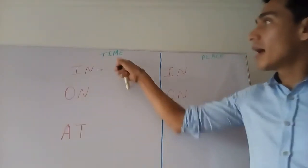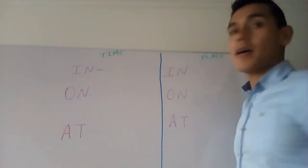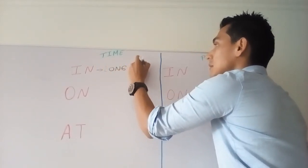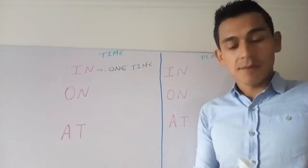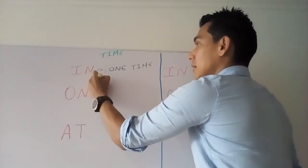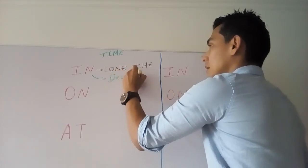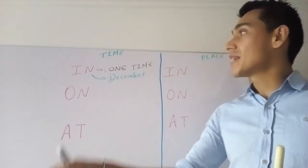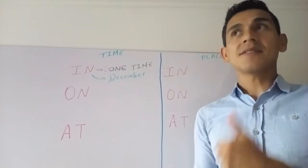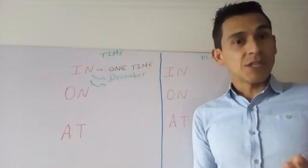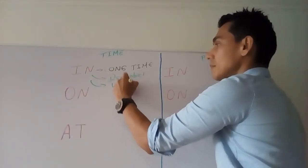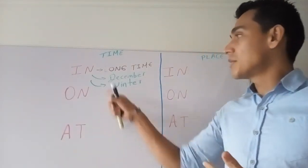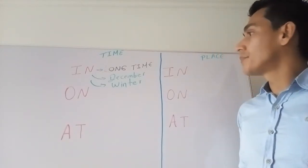As a time preposition, we use 'in' for long periods, long time. For example, in December — December has 31 days, it is a long period, a long time, so we say 'in December.' For seasons in English, for example we have winter, we say 'in winter.'